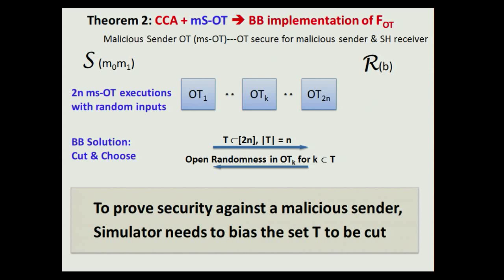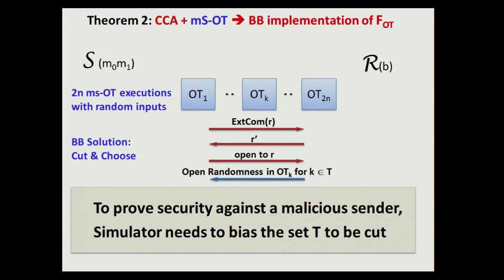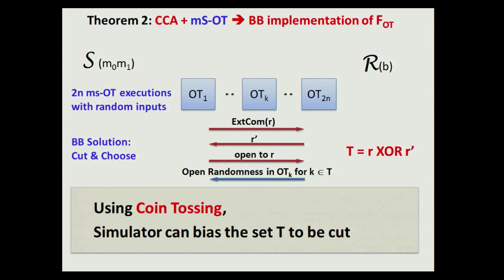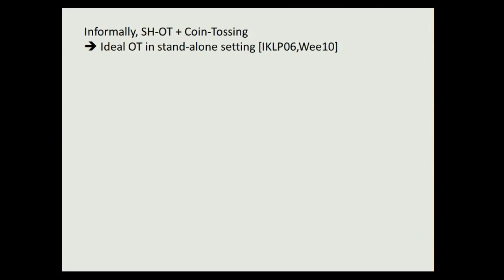The problem is that in order for the security proof against a malicious sender to work out, the simulator — while acting as the receiver — needs to be able to bias the set it needs to open. But there's no way of doing that right now because the malicious sender simply dictates the set T. To solve this, we change the protocol so that the sender and receiver jointly participate in a coin tossing protocol to decide the set to be cut. With coin tossing, the simulator can bias the set to be cut and the security proof will go through.